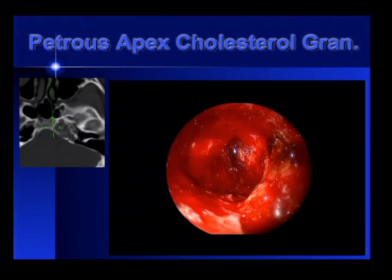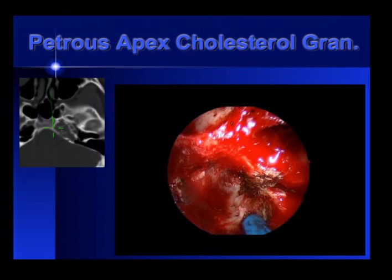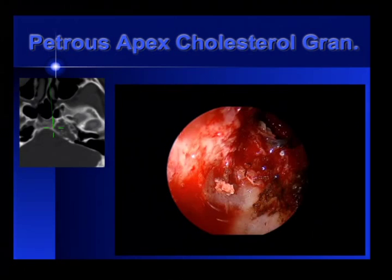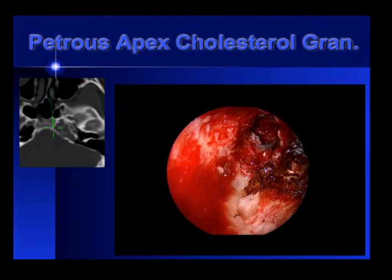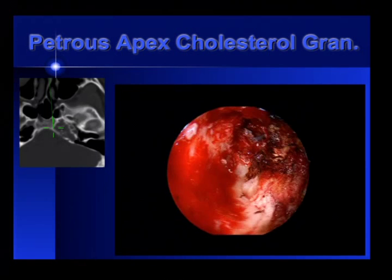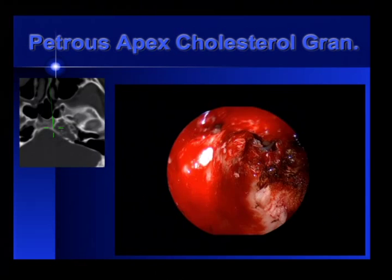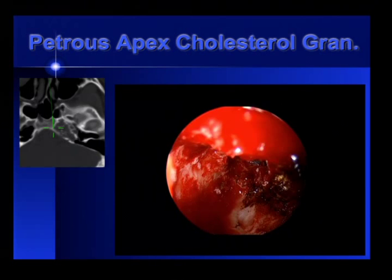Now we're actually using frontal sinus instruments in a 70-degree scope to come all the way up in here. And look — here's the silastic sheeting. This is a great endoscopic approach, not a transmaxillary approach, because I can see I don't even have to hurt endonasal anatomy to gain this. In this situation, you can save all the turbinates working past them, and eventually we just reach in and pull out that silastic sheeting.